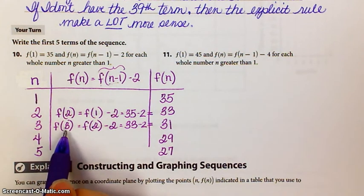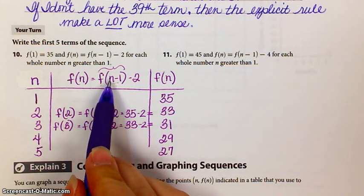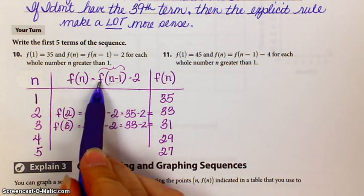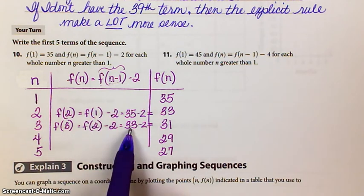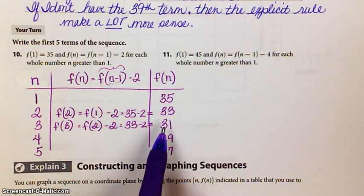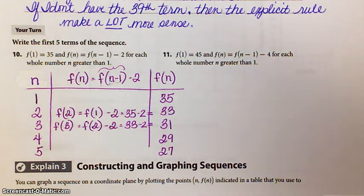Okay, value of the third term is, remember, the third minus 1, so the value of the second term minus 2. So that's going to be the value of the second term, which is 33 minus 2, and that gives you 31 for the third term.